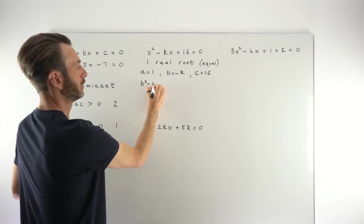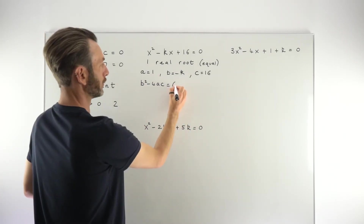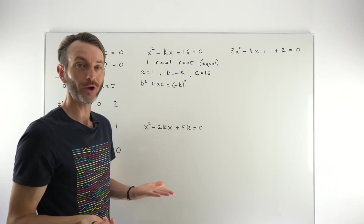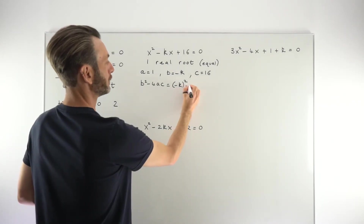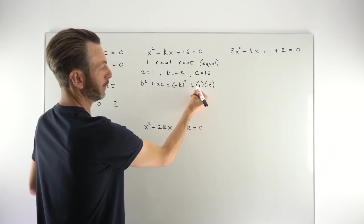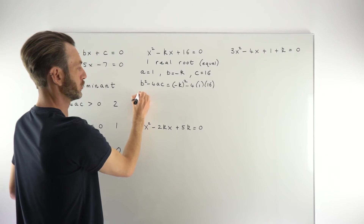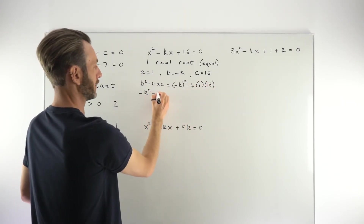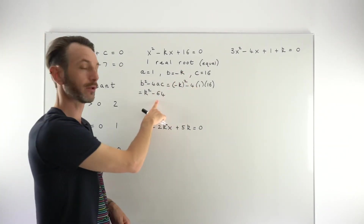Now we compute the discriminant: b² - 4ac. Substituting in, that's (-k)² - 4(1)(16). Be very careful here — a common mistake is writing -k² instead of (-k)², which are not the same. Simplifying: (-k)² gives positive k², and 4×1×16 = 64, so the discriminant is k² - 64.